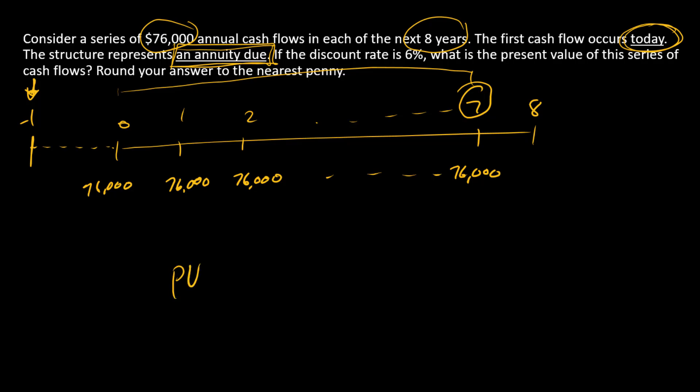We've got the present value of our annuity at time minus one using our annuity formula or financial calculator or Excel. That's going to give us this number: 471,944.3296.